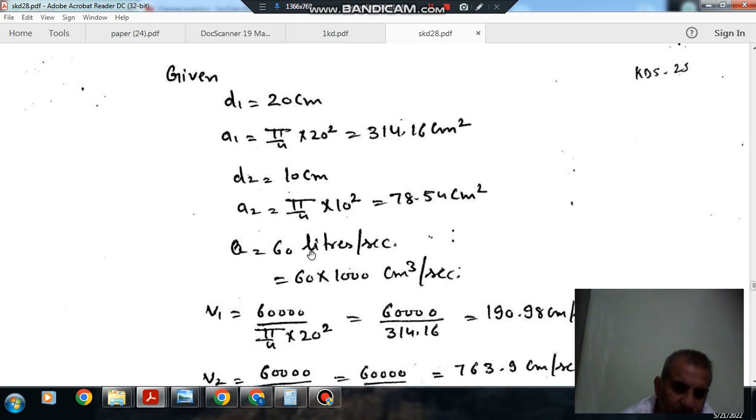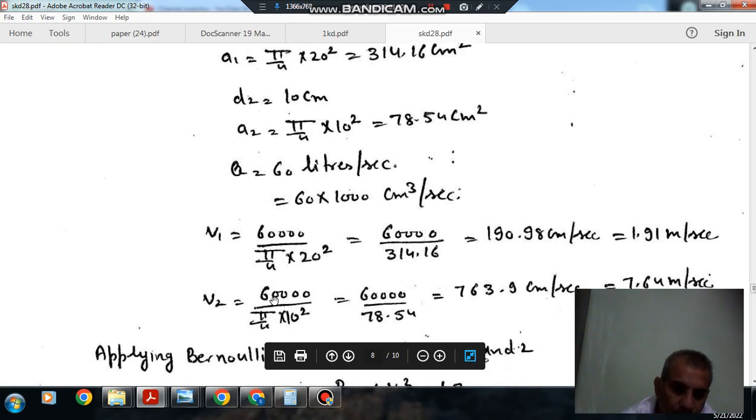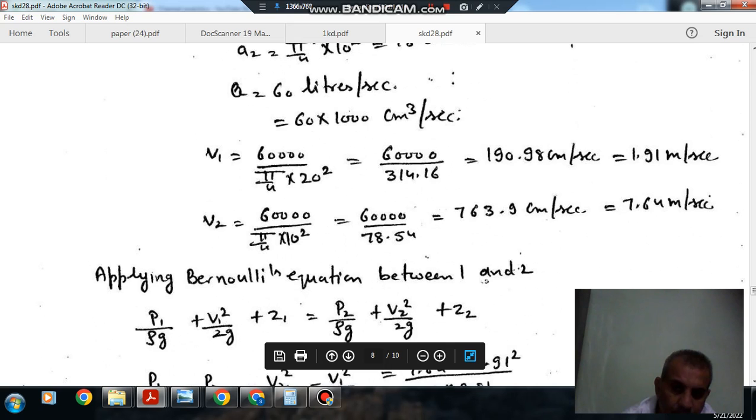Now Q is given as 60 liter per second, so it is 60,000 cm cube per second. V1 is here 60,000 divided by area, the velocity comes out as 190.8 cm per second or 1.91 meter per second. V2 is 60,000 divided by 78.54, that is 7.64 meter per second.